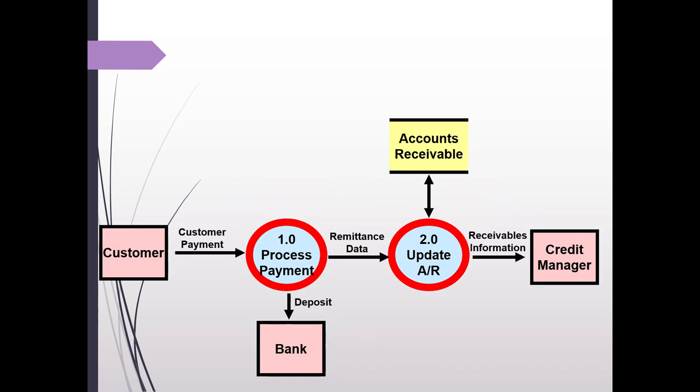So if we look at this data flow diagram again, we see that there's two processes. We have one which is process payment and the second one which is update the accounts receivable.